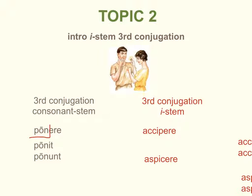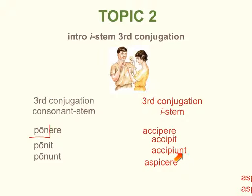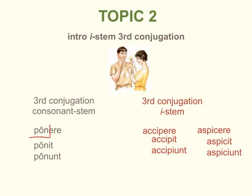For our purposes right now, what's special about i-stem third conjugation verbs is that the third person plural ends in -iunt rather than -unt, as it does in a regular third conjugation consonant-stem verb. We need to remember that accipere and aspicere are third conjugation i-stem verbs with this key distinction in the third person plural.